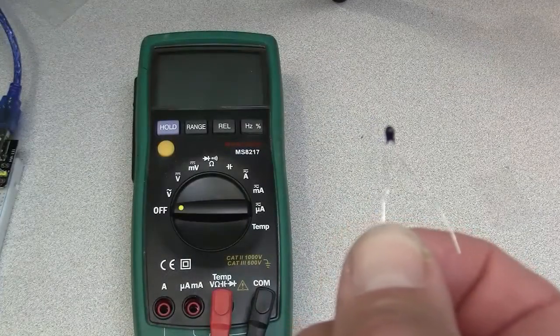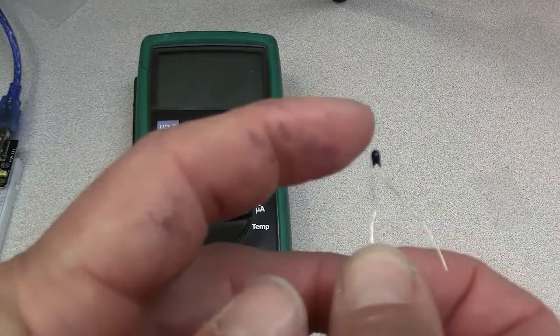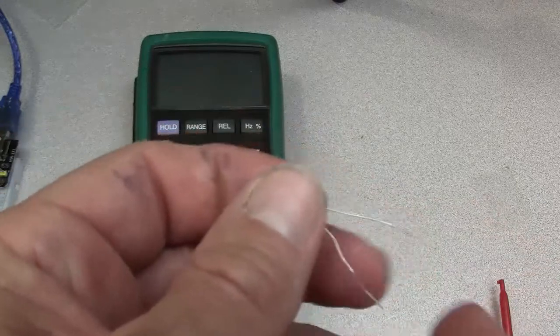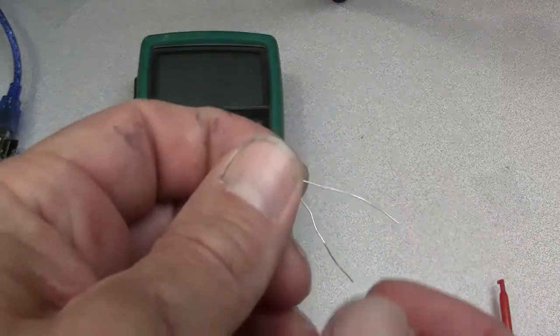This is my thermistor. If the temperature of this point changes, the resistance between these two terminals of the gauge changes.